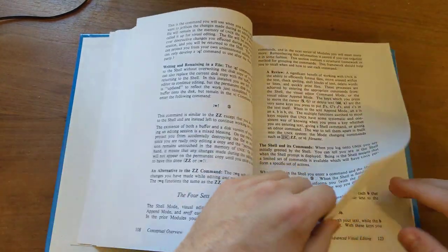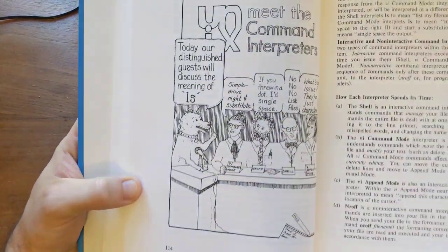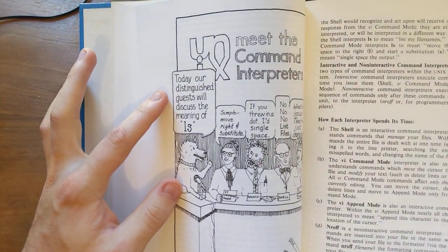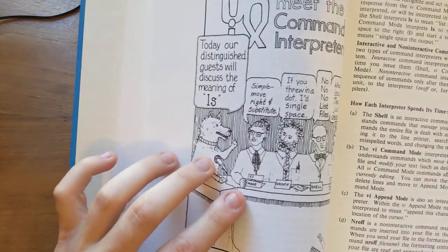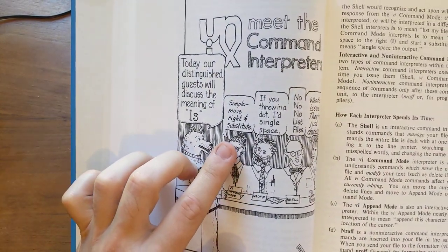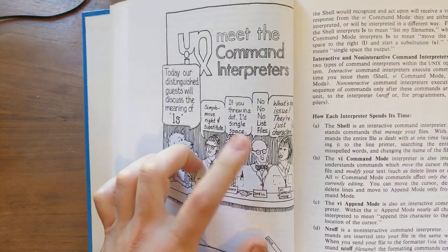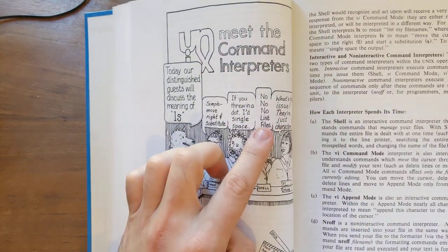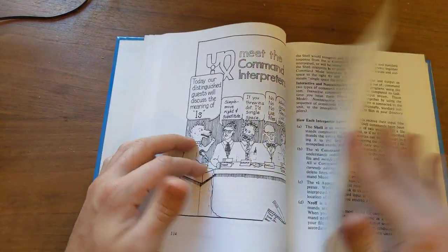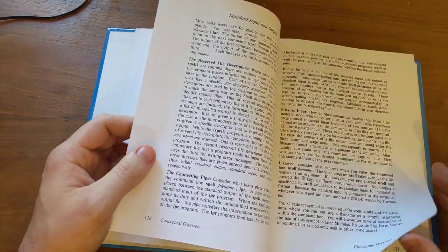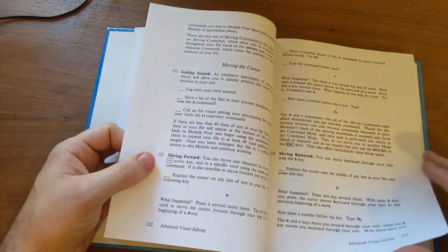Other things, let's, let's skip ahead. Let's skip ahead. Oh, yeah, here's, here's another little, little cartoon we gotta read. Meet the command interpreters. Today, our distinguished guests discuss the meaning of LS. Okay, so, Vi command mode says, move, write, and substitute. Enroff says, if you threw in a dot, it'd be a single space. So, you know, it's just the, LS means something different everywhere. In the shell, it means list files. And then, in append mode, it's just typing stuff out. All right, so, that's just, this cutesy boomer humor. I mean, none of this stuff is actually funny, of course. That would totally destroy the purpose.